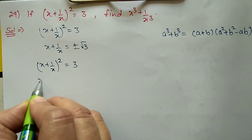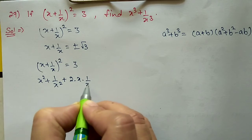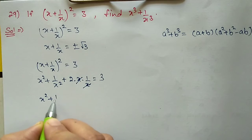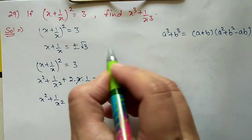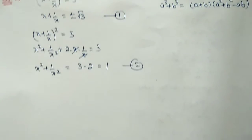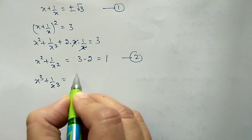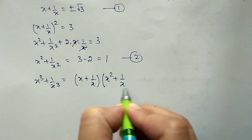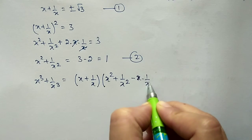After squaring, we get x² + 1/x² + 2 × x × 1/x = 3. The x terms cancel, so x² + 1/x² = 3 − 2 = 1. Now substituting into the formula: x³ + 1/x³ = (x + 1/x)(x² + 1/x² − x × 1/x), which gives ±√3 × (1 − 1).